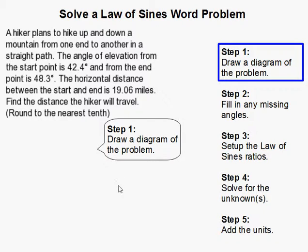Let's go ahead and draw this. He hikes up and then he hikes down. Here's the hike up, here's the hike down, and here is if he was able to go through the mountain. Remember the angle of elevation from the starting point is 42.4 degrees, so